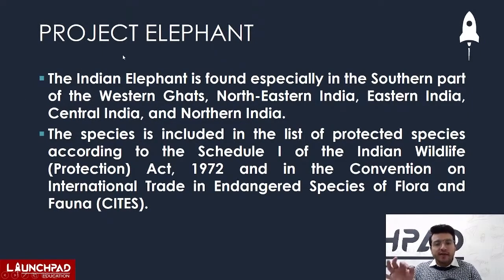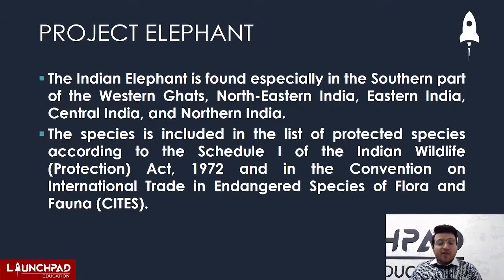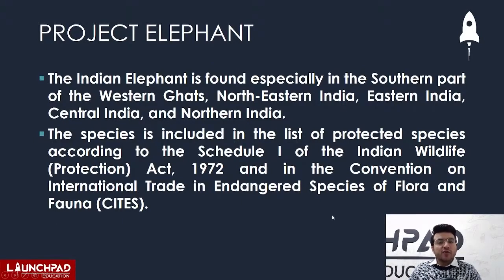The Indian elephant is found especially in the southern part of the Western Ghats, in northeastern India, eastern India, central India, and northern India. The Wildlife Protection Act 1972 — a very important act — lists the Indian elephant in Schedule 1. It is also listed in CITES, the Convention on International Trade in Endangered Species of Flora and Fauna.